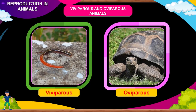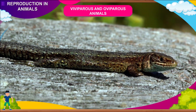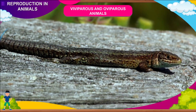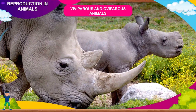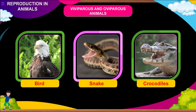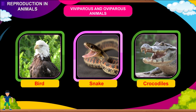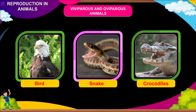Viviparous and Oviparous Animals: some animals give birth to young ones after the embryo develops inside the female body. They are called viviparous animals — for example, the mammals. Those animals which lay eggs and in which the development of the embryo takes place outside the female body are called oviparous animals — for example, birds, snakes, crocodiles, etc.